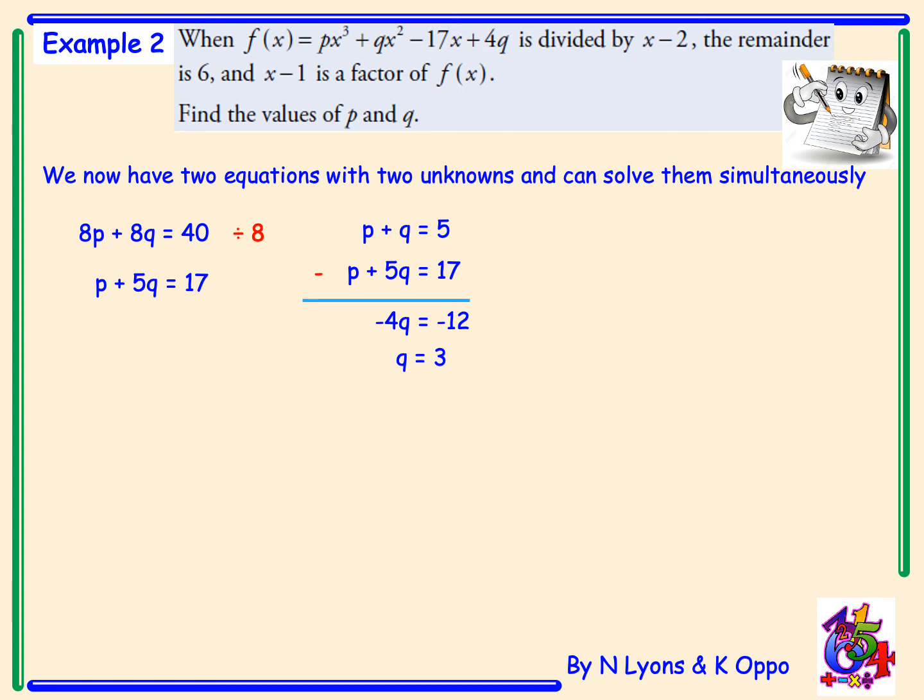So, that's us find one of our missing coefficients. We must now sub q equals 3 into any of the equations. But I have chosen p plus 5q equals 17. So, we have p plus 5 times 3 equals 17. p plus 15 is 17. Therefore, p is equal to 2. Final answer is q is 3 and p is 2.